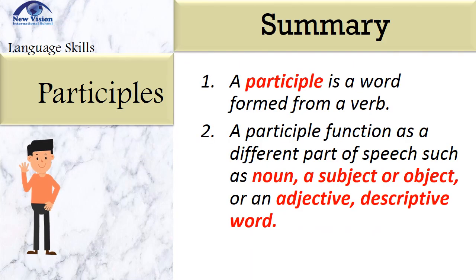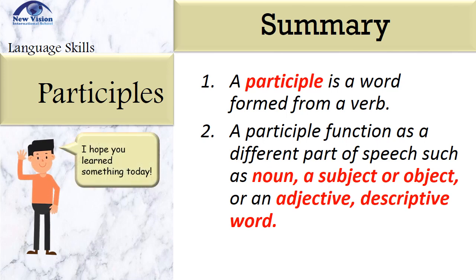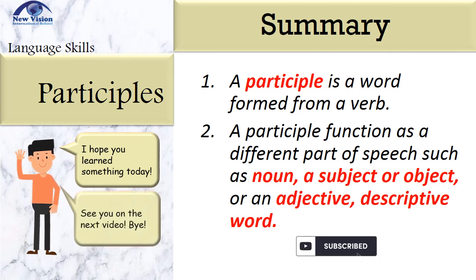In summary, a participle is a word formed from a verb, and it functions as a different part of speech — such as a noun, even a subject or an object, or an adjective, a descriptive word. I hope that you learned something today. Don't forget to hit that subscribe button. See you in the next video. Bye-bye!